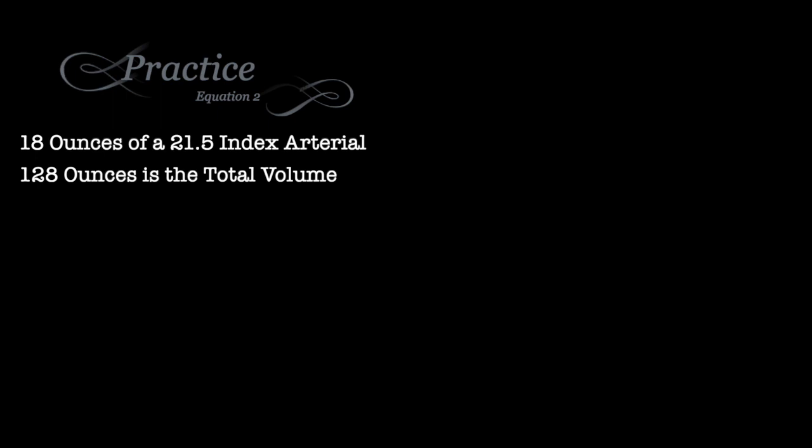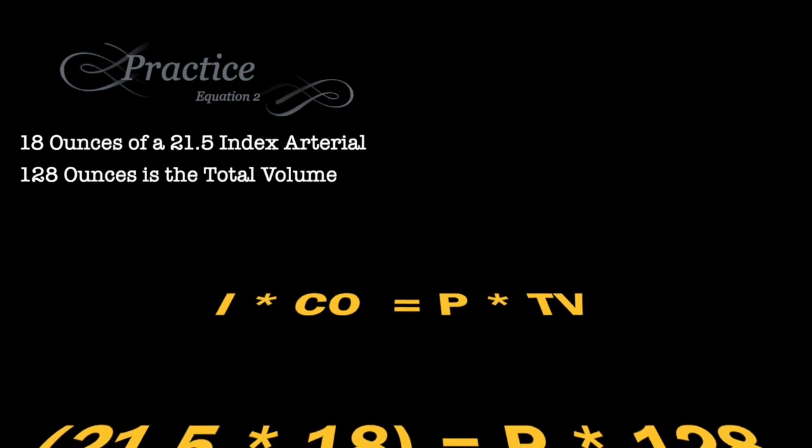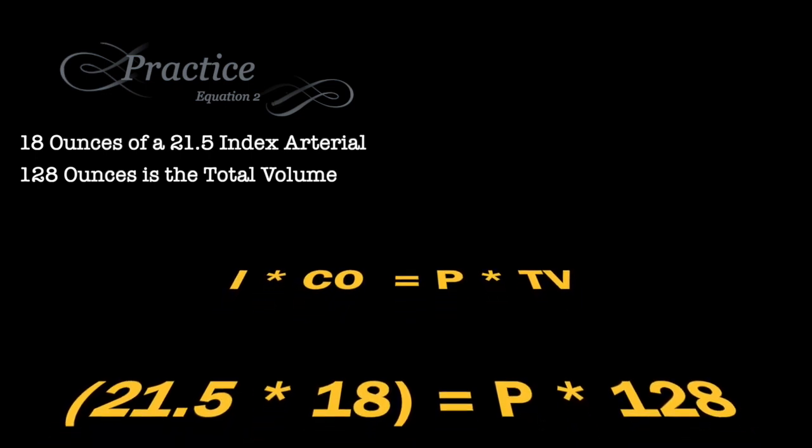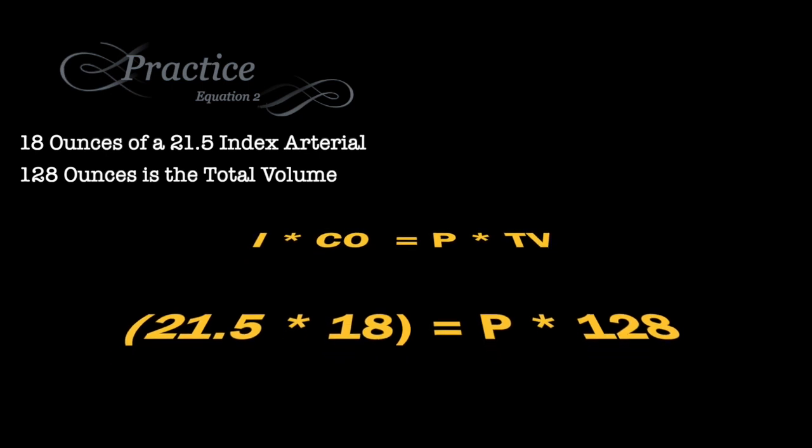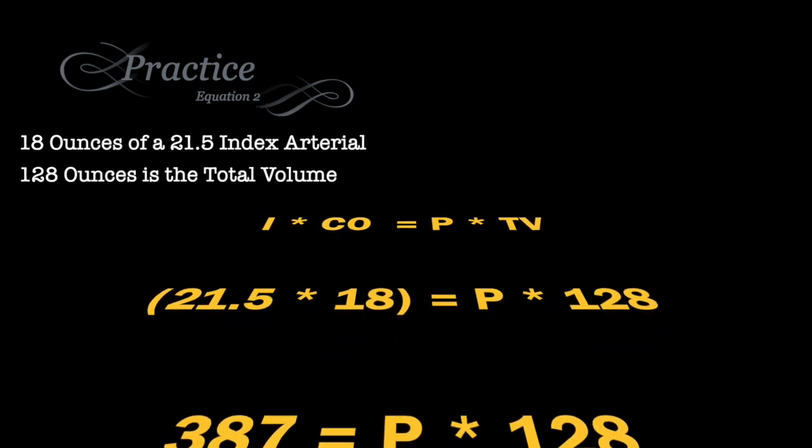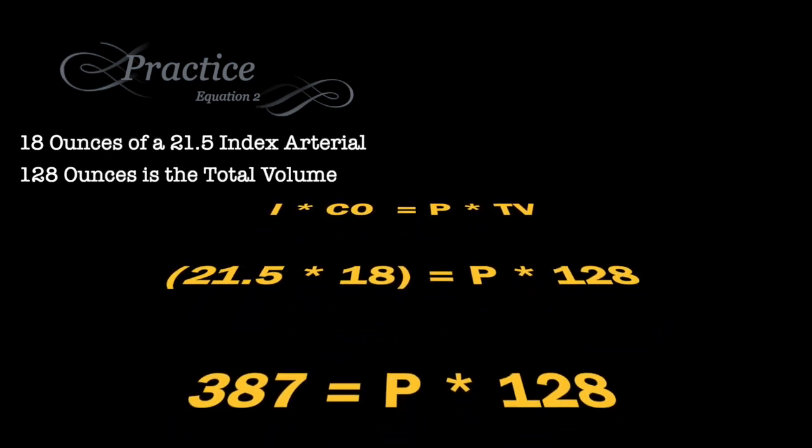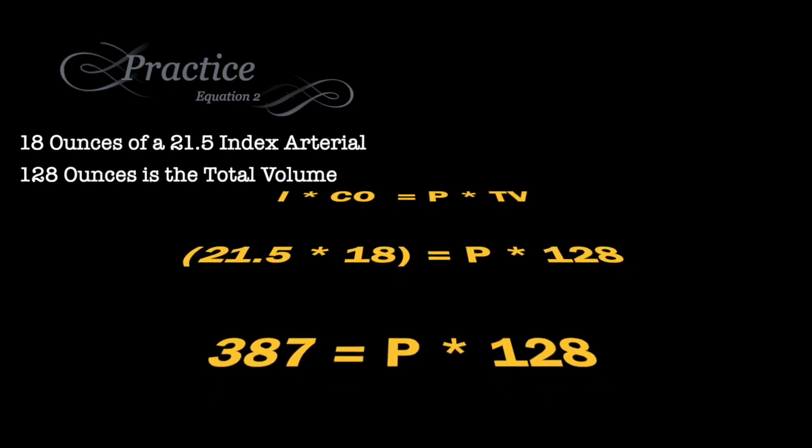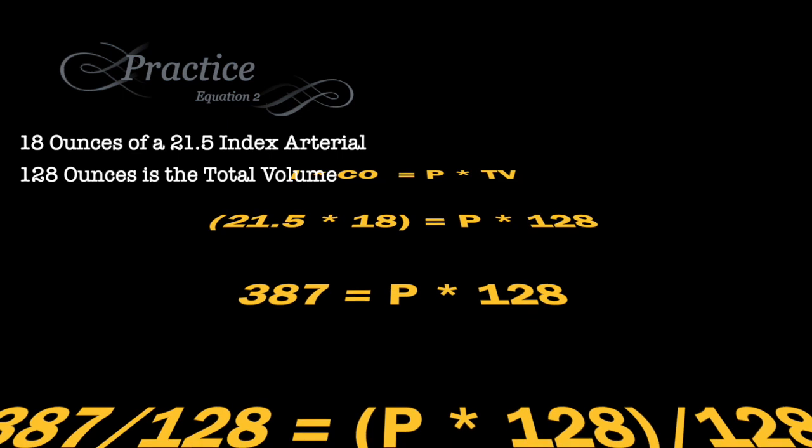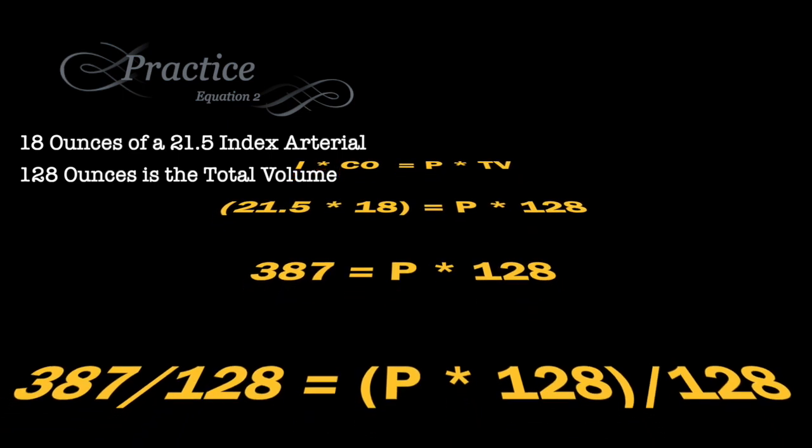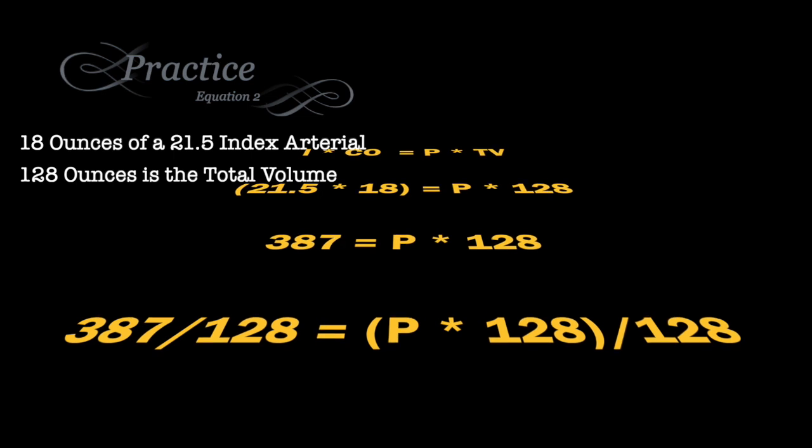Using our standard equation of index times concentrated ounces equals the percentage in the tank times the total volume in the tank, we plug our numbers in. So we have a 21.5 index, multiply that by the 18 ounces in the bottle, equals P times 128, our total volume in the tank. 21.5 times 18 is 387. That still equals P times 128.